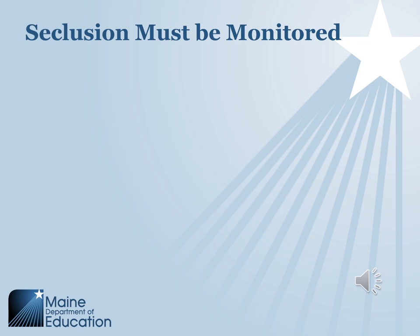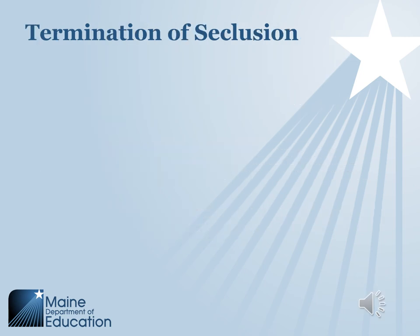Staff must remain emotionally regulated during seclusion, similar to restraint. Seclusion must end immediately when the risk of imminent danger of serious physical injury has passed. If seclusion continues beyond 10 minutes, staff must determine whether it remains warranted. Similar to ending a restraint, if attempts to terminate seclusion are unsuccessful, staff can request support from caregivers, parents, family, intervention teams, and other community resources.